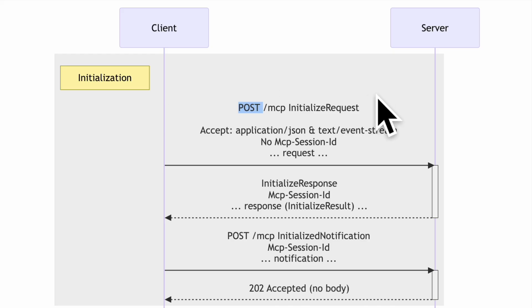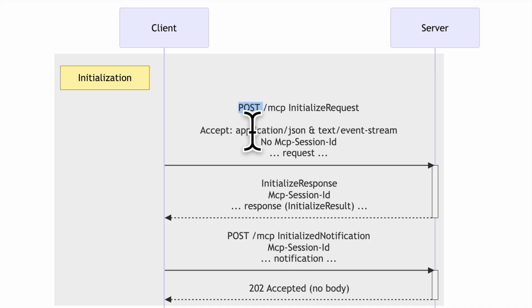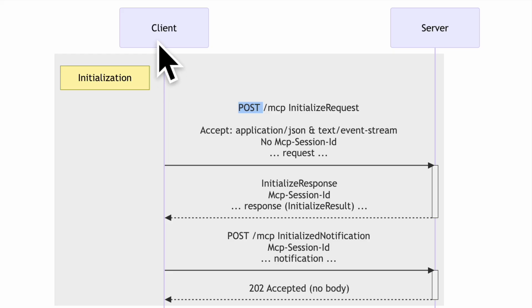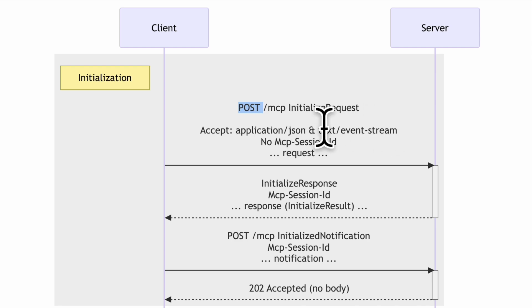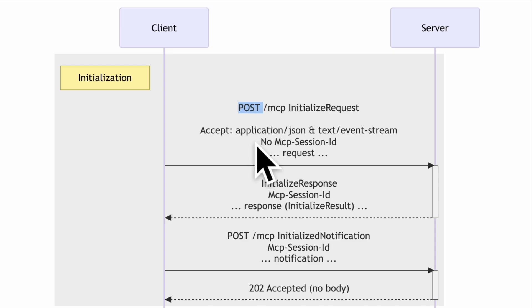During initialization, the client sends a POST request to the /mcp endpoint with an initialized request to start the MCP session. It specifies accepted responses: application/json for a single simple JSON response, and text/event-stream for a stream of SSE messages. Per the Streamable HTTP protocol, clients must accept both — you cannot build a client that only accepts simple JSON responses.